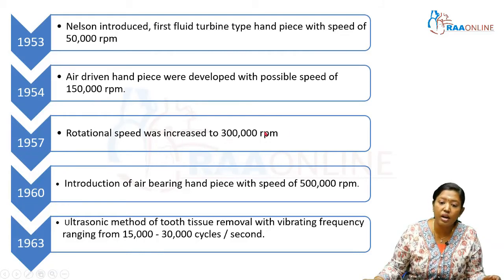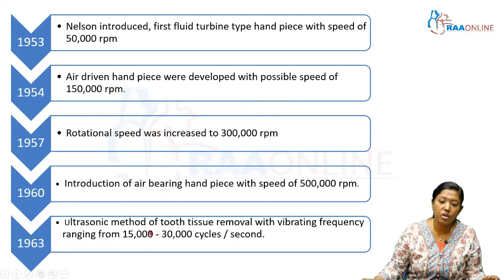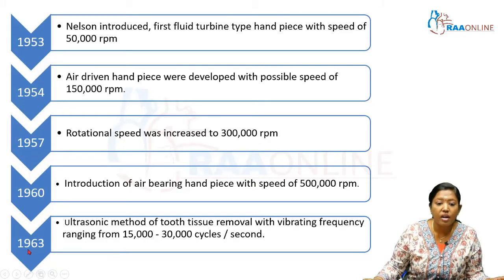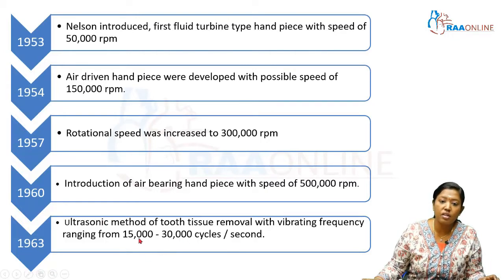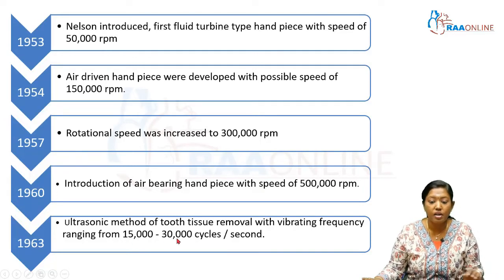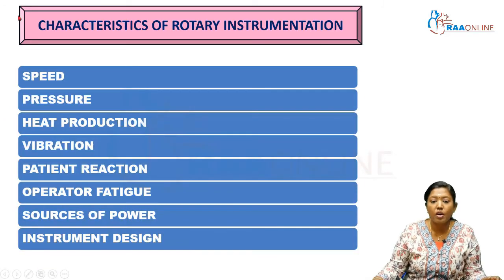The rotation speed was further increased, and in 1960 the air bearing handpiece with a still higher speed of around 500,000 RPM was introduced. Also, the introduction of ultrasonics in 1953 brought vibration frequency of 15,000 to 30,000 cycles per second, which was used for tooth structure removal.